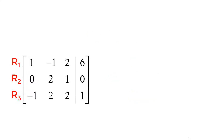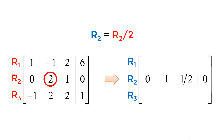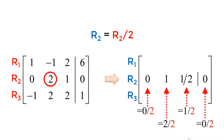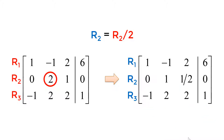Next step is to make my 2 into 1. Since I have 2, I will use the row multiplying operation — I divide each element in the second row by 2. As a result, the new elements will be 0, 1, one-half, and 0. I keep all elements in the first and third rows the same. You have successfully reduced 2 to 1.